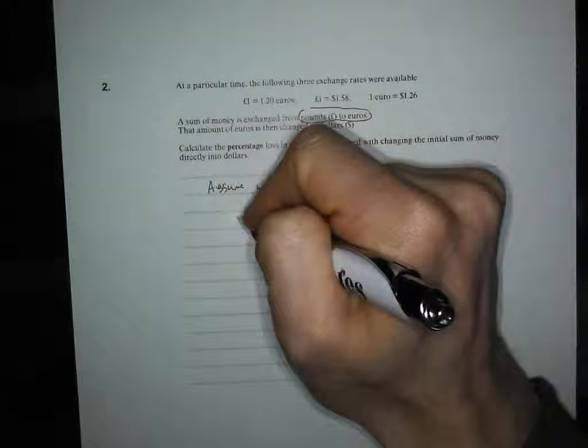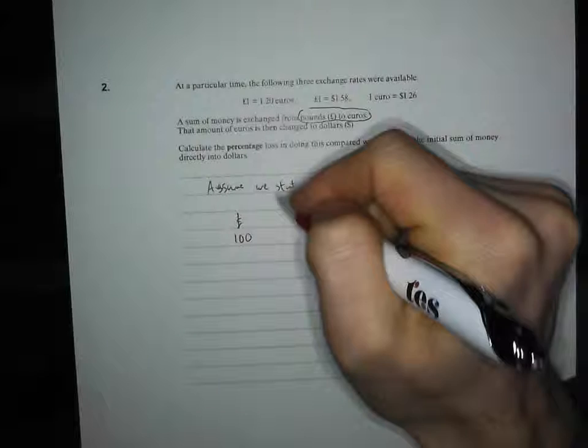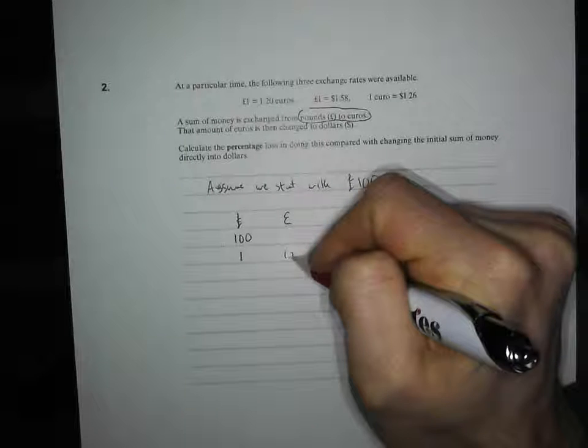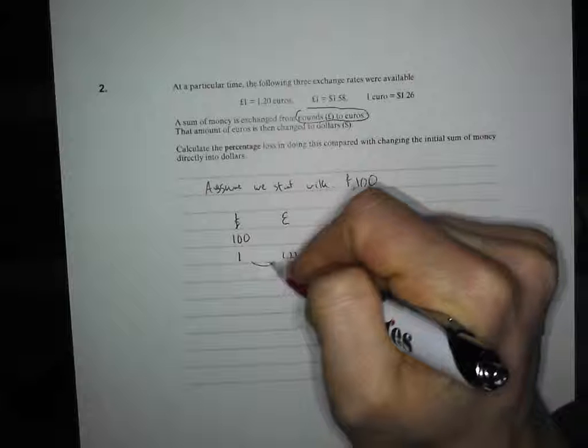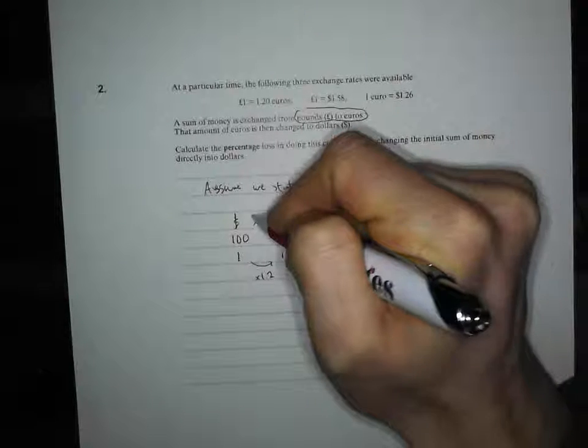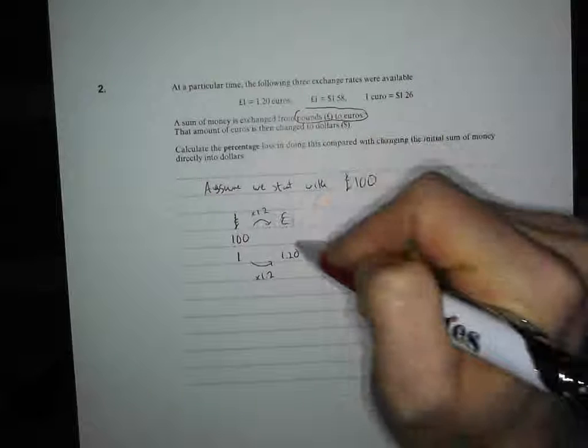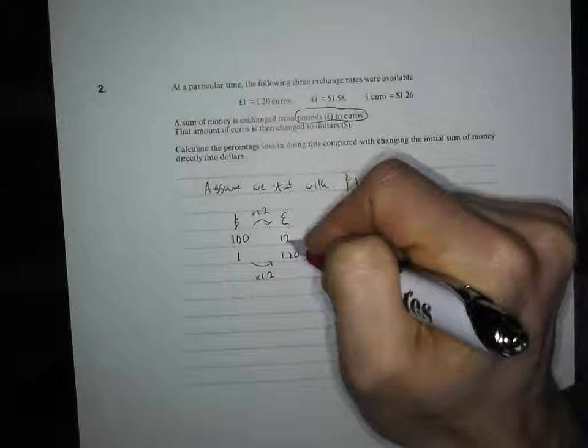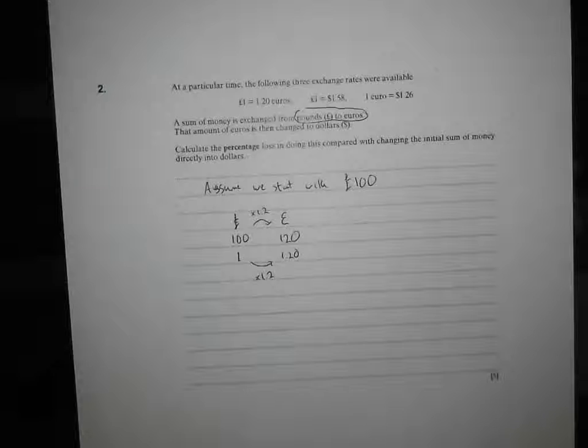We can do it using algebra, but if we assume we start with 100 pounds and we just fix that, it's just going to make all our calculations a little bit nicer. So, let's start with 100 quid. So, we've got 100 pounds, and we're going to first change that into euros. We know that one pound is 1.2 euros. So, to get from one pound to 1.2, we times by 1.2. So, to get from 100 quid to amount of euros, we're going to times by 1.2. So, we're going to get 120 euros. Nice, easy start.